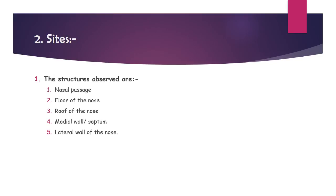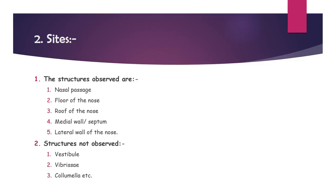Sites to be observed during anterior rhinoscopy: nasal passage, floor of the nose, roof of the nose, medial wall (septum), and the lateral wall of the nose — five sites in total. The sites that cannot be observed are the vestibule, vibrissae, and columella, because they are covered by the handles of the Thudicum or Vienna type nasal speculum.